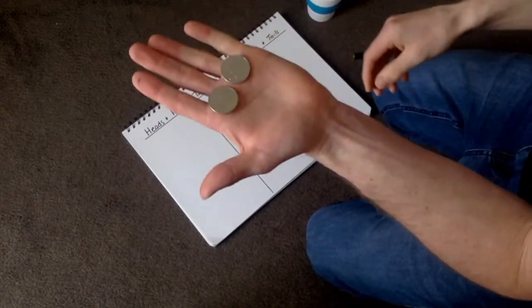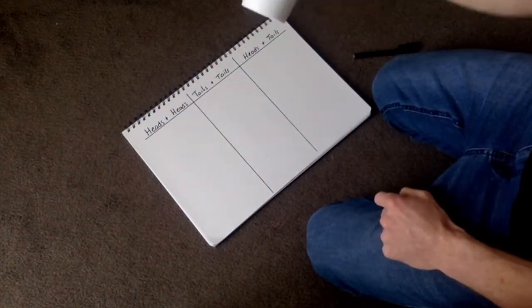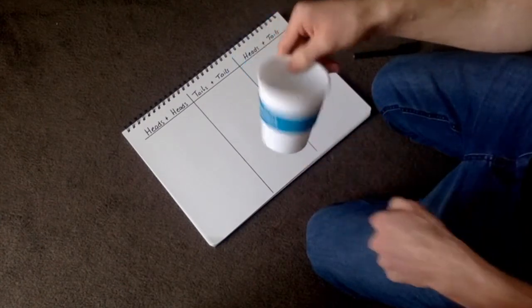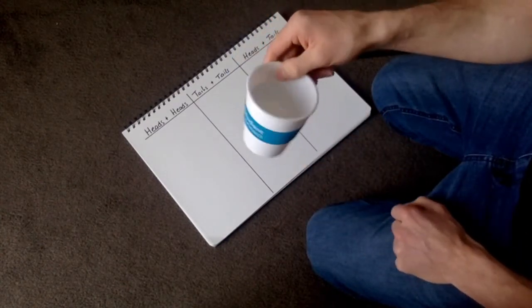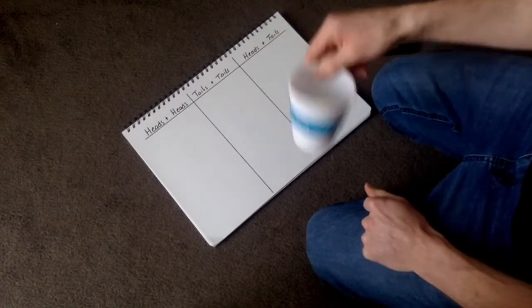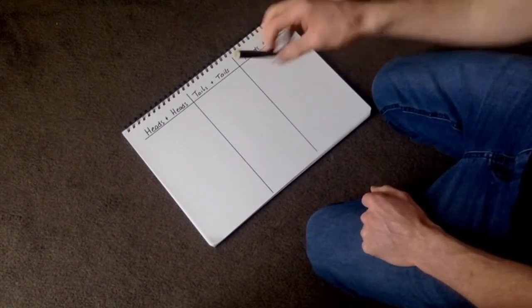So you need two coins, two silver coins, and then you'll need a cup. Now I've got a plastic cup which makes it a bit better. So don't get a glass one because it might sound a bit loud and you just never know what might happen.